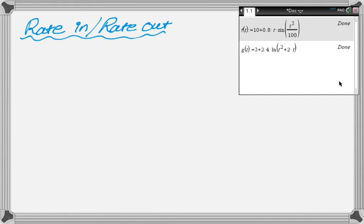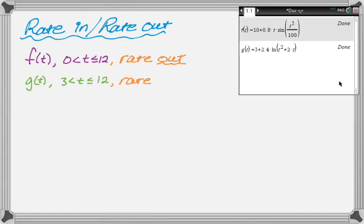And we're also told two things. So we know that f of t is the rate at which the bananas are removed from the display table, and that applies from 0 to 12. And so that is the rate out. And we're also told that g of t is the rate at which employees add bananas. So that's the rate in, but g of t is only valid from 3 to 12. So that's going to be important as we go through and do the problem. Both of them are in pounds per hour, and t is hours after the store opened.